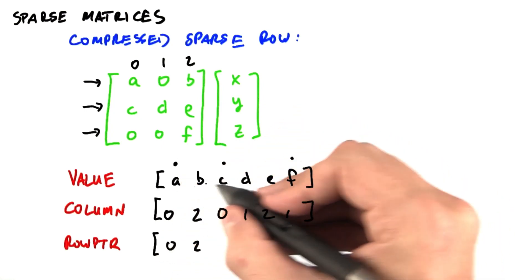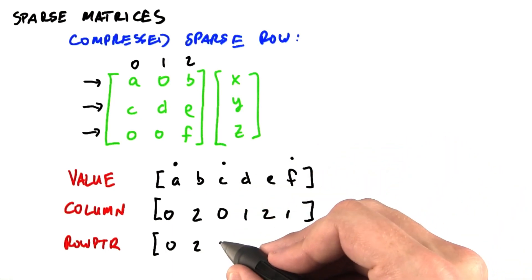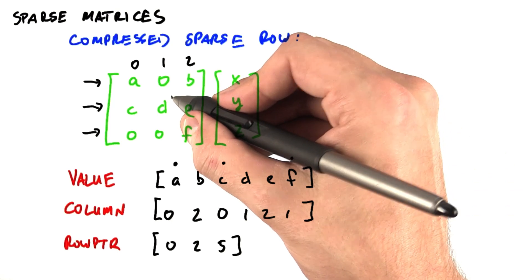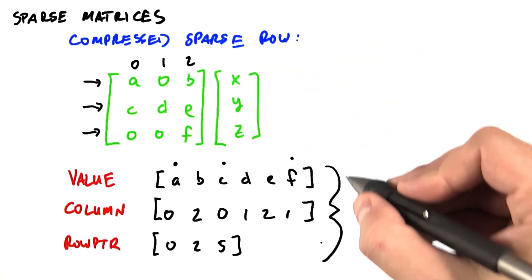value C is at index 2, and value F is at index 5. Now we can reconstruct this sparse matrix with these three arrays.